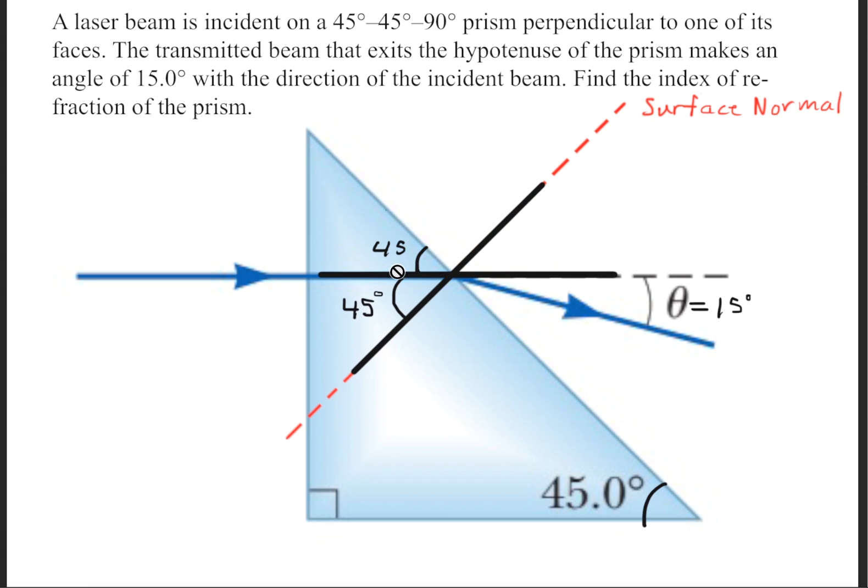Now once again, direct your attention to these black lines that I have made right here. So if you recall from geometry, when you have intersecting lines, the opposite angles are congruent to one another, so they're equal. So this angle right here should be equal to this angle right here.